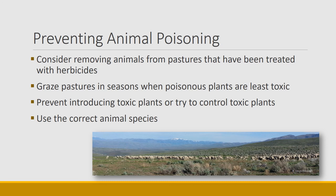Preventing the introduction of toxic plants or trying to control them is important. Always use the correct animal species. Historically, sheep would move through areas with a lot of tall larkspur — they like tall larkspur, remove it from the pasture, and it's not very toxic to them. Then behind them would come cattle, who like grass more and are strongly affected by tall larkspur. But if it has already been removed by the sheep, the cattle can travel through safely. This multi-species grazing situation was used historically throughout the West to reduce the loss of cattle to tall larkspur.